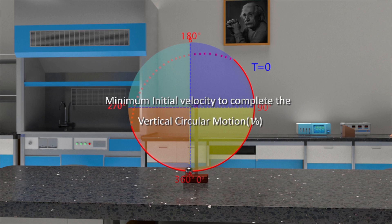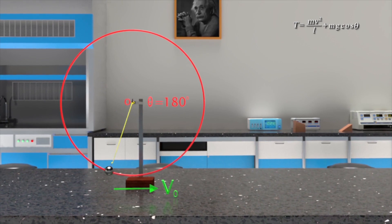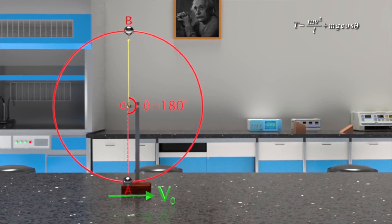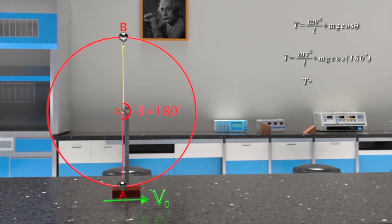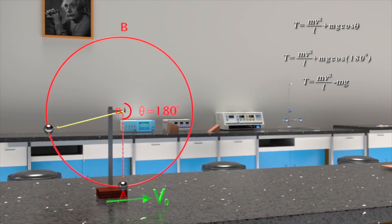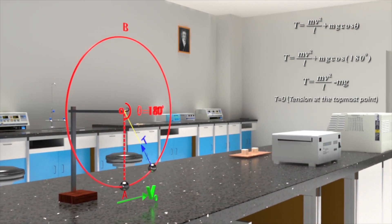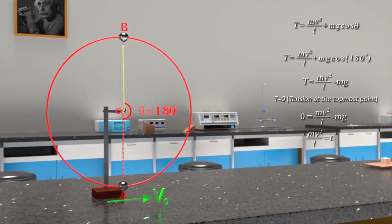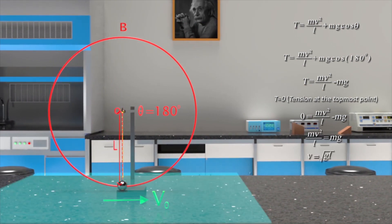Minimum initial velocity to complete the vertical circular motion: Consider the case where initial velocity of the bob is sufficient to complete the whole circle. At the highest point B, theta is 180 degrees. Substituting theta equal to 180 degrees in this equation, tension in the string is equal to Mv square by L minus Mg. If the initial speed is just sufficient to bring the bob to the highest point, tension in the string at this point is zero. Therefore, Mv square by L equals to Mg, which gives v equals to square root of gl. This is the minimum velocity the bob can have at the highest point.